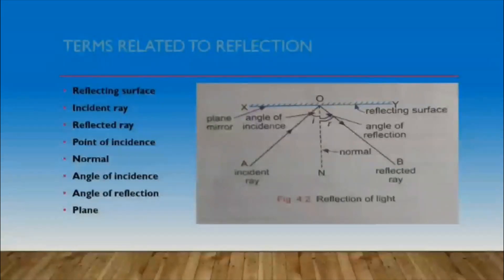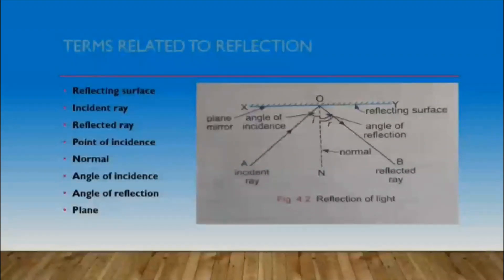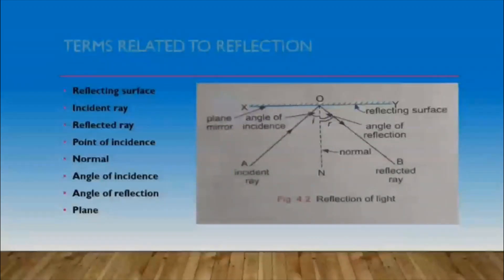The second one is the incident ray. In the figure, AO is the incident ray. The incident ray can be defined as the ray of light which is falling on the reflecting surface. The third one is the reflected ray. In the figure, OB is the reflected ray. The reflected ray can be defined as the ray of light which bounces or returns back after striking the reflecting surface in the same medium. The next one is the point of incidence. In this figure, O is the point of incidence — the point where the incident ray strikes on the reflecting surface.